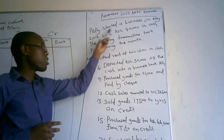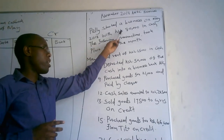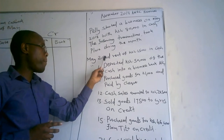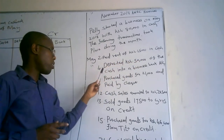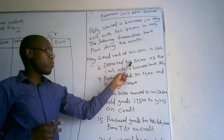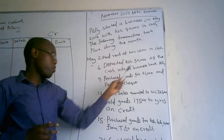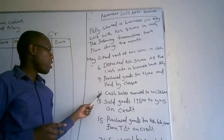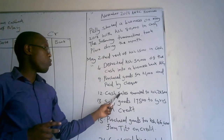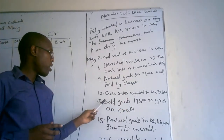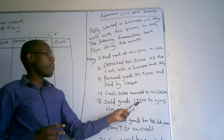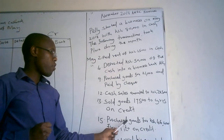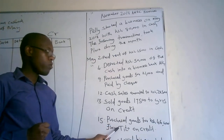Paley started a business on May 2018 with $8,000 in cash. The following transactions took place during the month. May 2: paid rent of $15,000 in cash. May 4: deposited $50,000 of the cash into a business bank account. May 9: purchased goods for $21,000 and paid by cheque. May 12: cash sales amounted to $20,500. May 13: sold goods for $15,500 to Silas on credit.